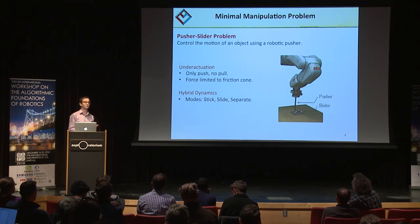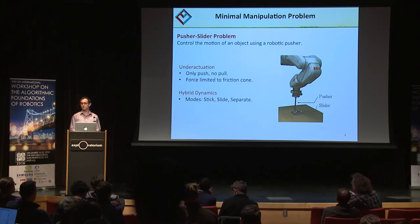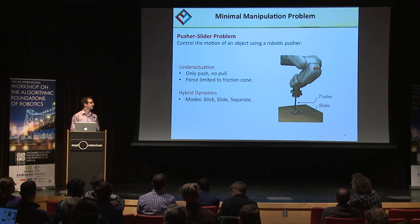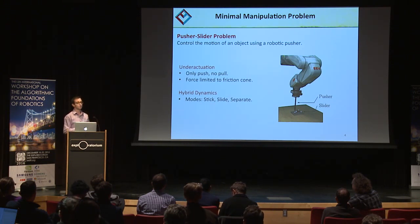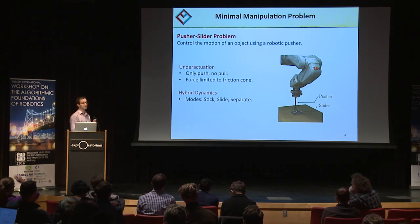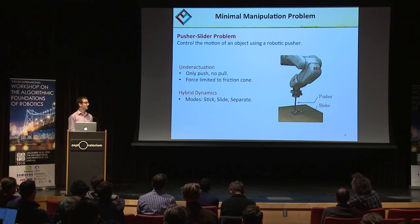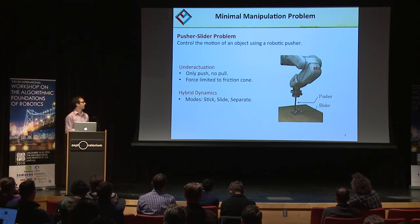We searched for a minimal manipulation task that would encapsulate both of these challenges. To us, that's the pusher-slider system, where the goal is to push a sliding object using a single frictional contact point that we refer to as the gripper. This is an underactuated system — you can only push on the object, you can't pull, and the forces are limited to the friction cone. It also exhibits hybrid dynamics: the pusher can either stick, slide, or separate relative to the object.